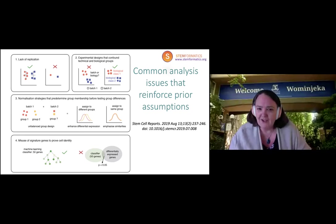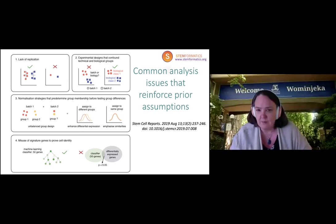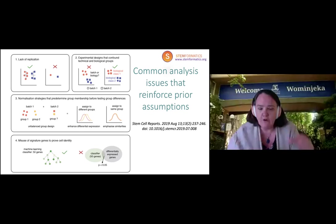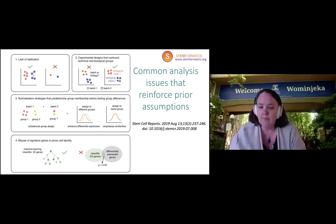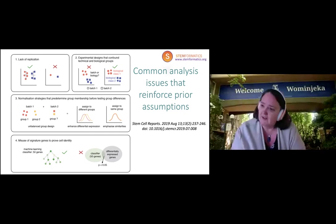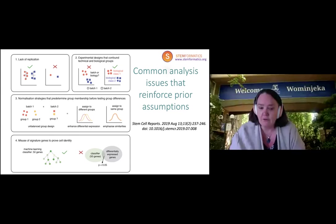Why do they fail? There are a lot of experimental design flaws, particularly when working with small datasets — important to emphasise even to the single cell community because these are flaws that propagate across platforms. This is where an assay is run on a very small number of replicates, making proper statistical modelling very difficult, or where batch and biology are confounded so you can't deconvolute variants. Normalisation strategies can compound this problem, especially supervised approaches that can exaggerate or diminish differences between groups. You need to be really aware of the statistical structure of your data.